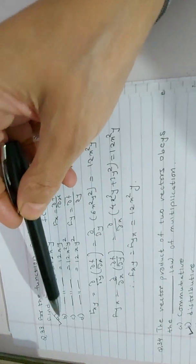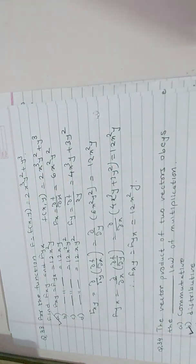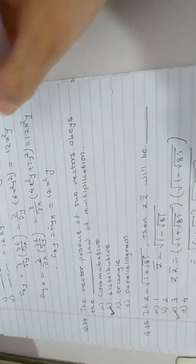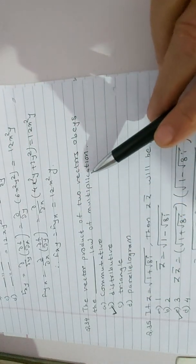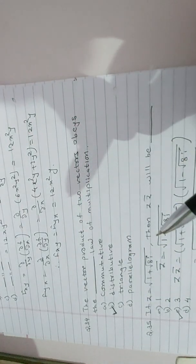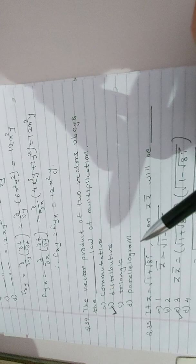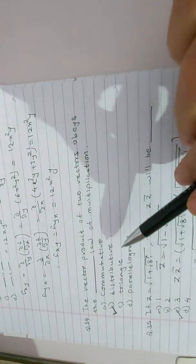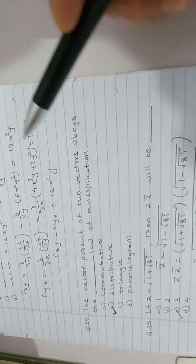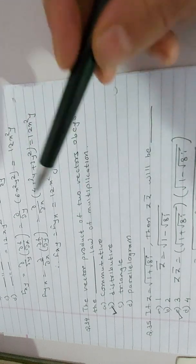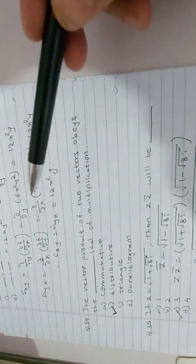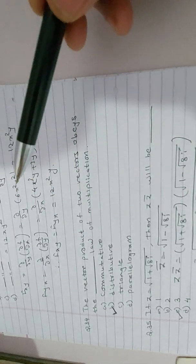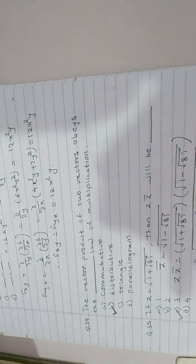Next simple question: the vector product of two vectors obeys the distributive law of multiplication. We have seen other laws when we discussed vector products — this is a theory part.